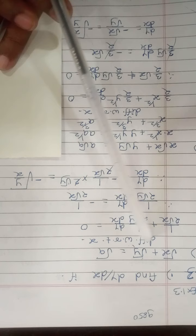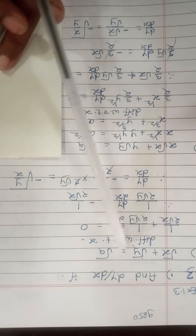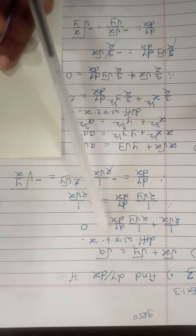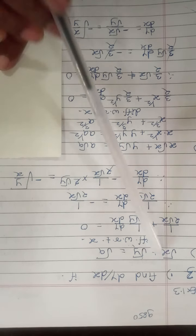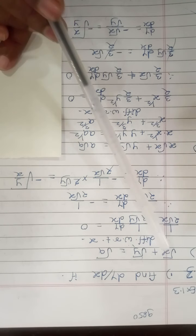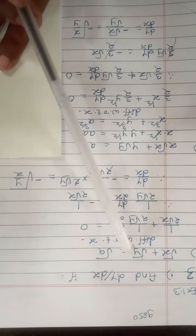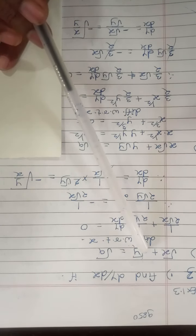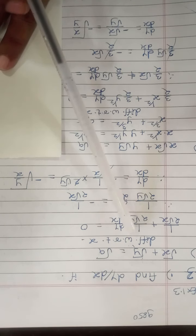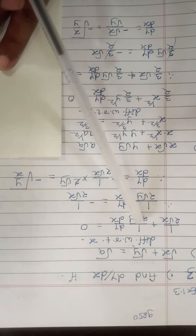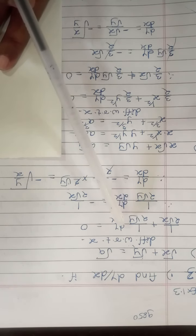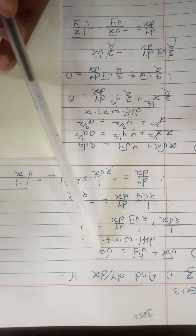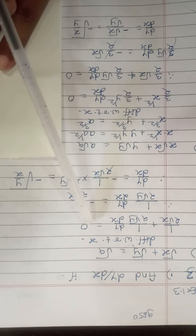Starting with example 1: √x + √y = √a. Differentiating with respect to x, the formula for the derivative of √x is 1/(2√x). Similarly, treating √y like √x and differentiating with respect to x gives 1/(2√y). The derivative of y is dy/dx. Since a is a constant, its derivative is 0.